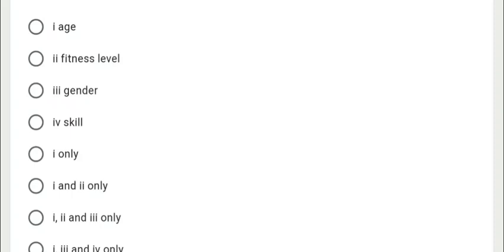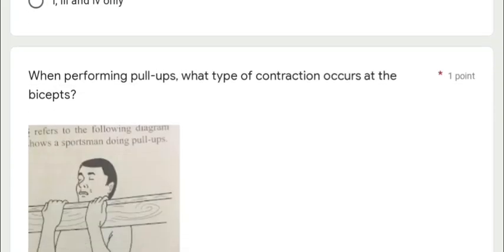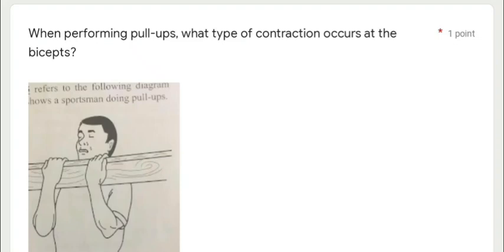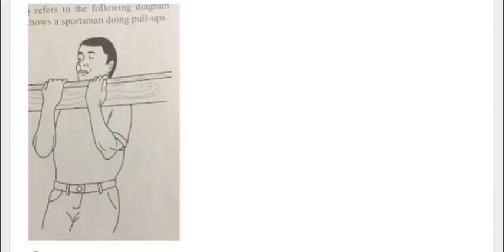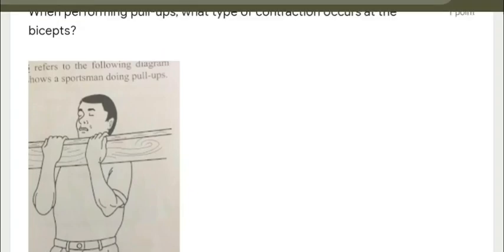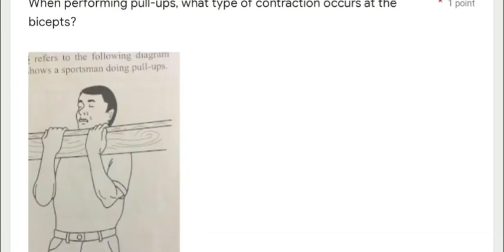When performing pull-ups, what type of contraction occurs at the biceps? Remember, the biceps are the front of the arm right there. So what type of contraction occurs? Is it isotonic, isometric, isokinetic, or involuntary? And so it is isotonic. Very good.